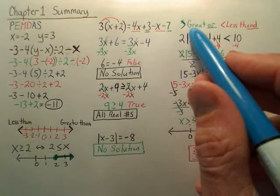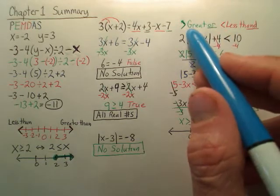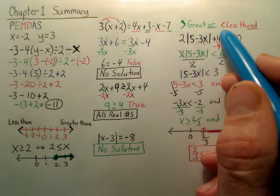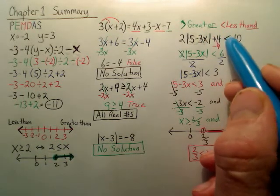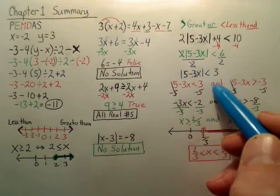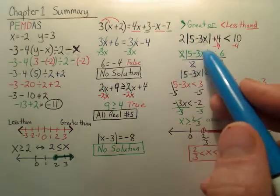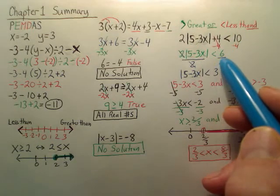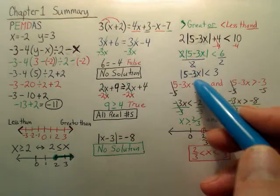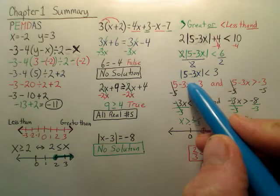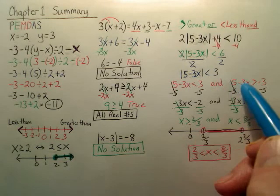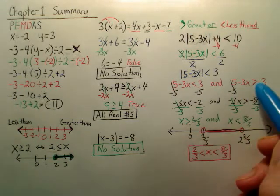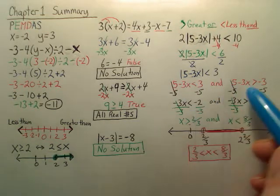Okay, last thing. Absolute values. You have to first tell if it's an or or an and. Greater or's, less and's. This is a less than, so it's an and. Bam. I first have to get the absolute value by itself. So minus the 4 over, divide by 2. From here I make two equations. The first one just stays the same. The second one, flip the sign. So the sign got flipped. Make it a negative.